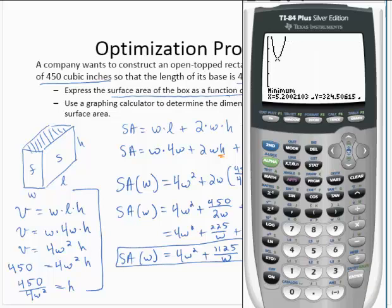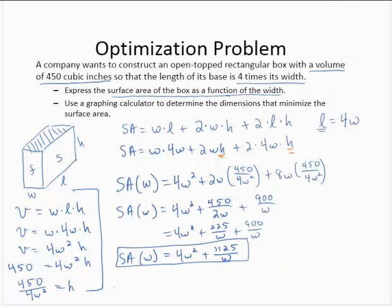So the x minimum, the minimum occurs when x is 5.2. So x min was approximately 5.2. So that was the width.